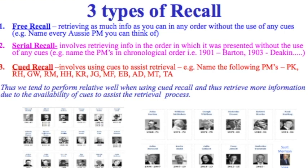The third type is cued recall. This time we're asking people to retrieve information from their LTM but we're giving them cues to assist that mechanism. It's different from recognition — recognition is where we give you alternatives. With cued recall we're giving things like initials, and from a list of initials, name every Prime Minister you can retrieve from your LTM back into your STM. We tend to do a bit better on cued recall because of the assistance of those cues.